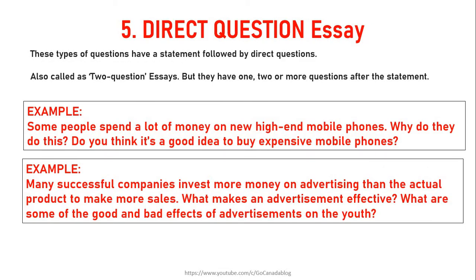The fifth type is a direct question essay, also called a two-question essay, though they can have one, two, or more questions after the statement. For example: 'Some people spend a lot of money on new high-end mobile phones. Why do they do this? Do you think it's a good idea to buy expensive mobile phones?' You are given a statement followed by direct questions, and you answer those questions in your essay.